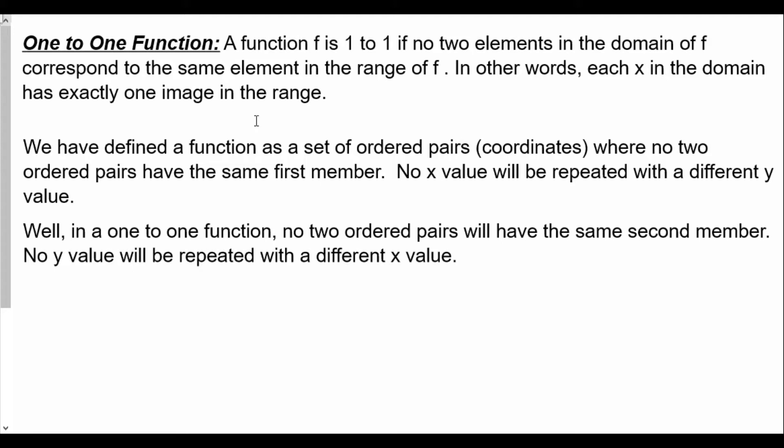In other words, each x in the domain has exactly one image in the range. We talked about a function defined as ordered pairs where no two ordered pairs have the same first member — meaning for each value of x there's one and only one value of y. For a one-to-one function, no two ordered pairs have the same second member either — meaning no y value is repeated with a different x value. So each x has its own y and each y has its own x. No repetition either way.